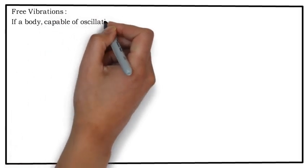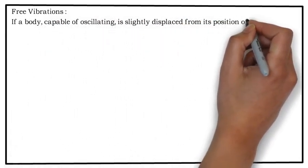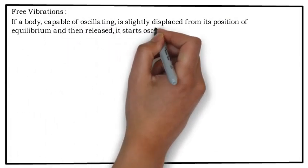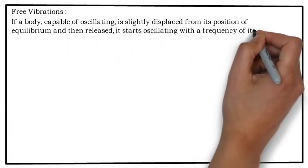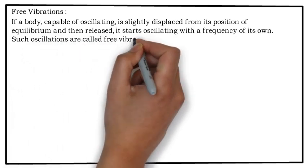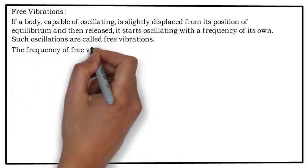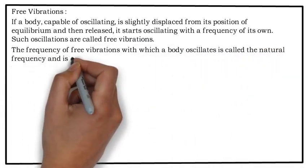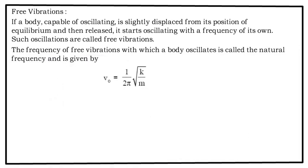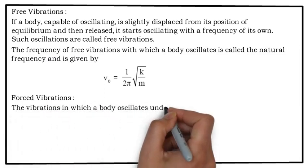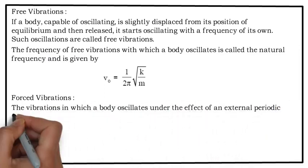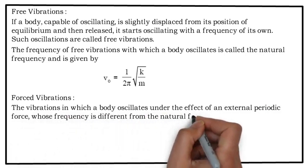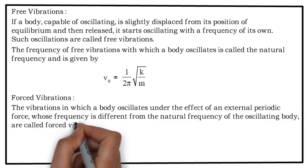Free vibrations. If a body capable of oscillating is slightly displaced from its position of equilibrium and then released, it starts oscillating with a frequency of its own. Such oscillations are called free vibrations. The frequency of free vibrations with which a body oscillates is called a natural frequency and is given by (1/2π)√(K/M). Forced vibration: the vibration in which a body oscillates under the effect of external periodic force whose frequency is different from the natural frequency of oscillating body are called forced vibrations.